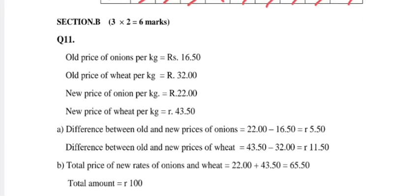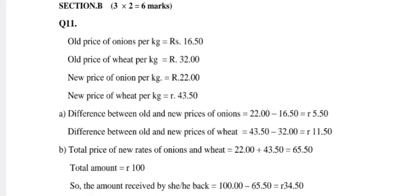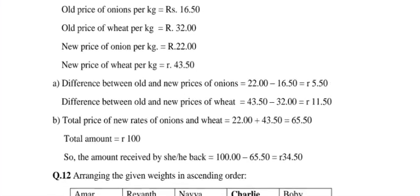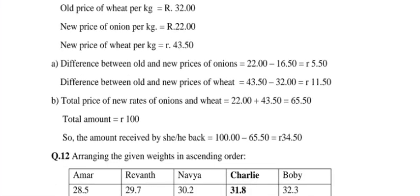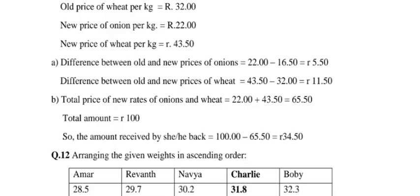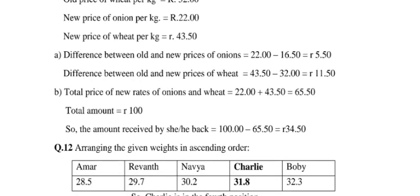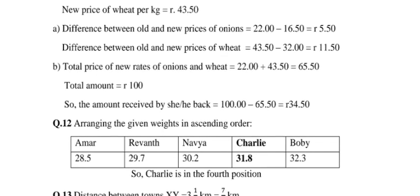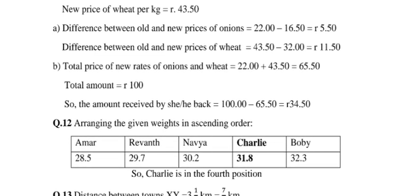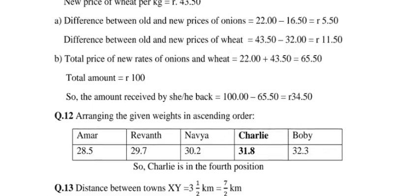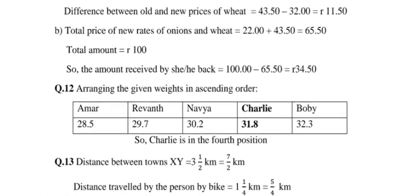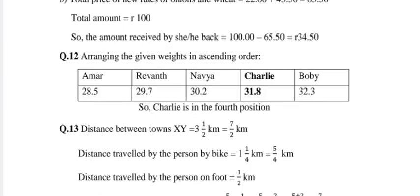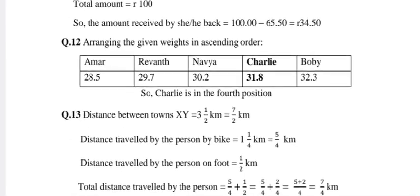Question 6 answer is B, Question 7 answer is D, Question 8 answer is B, Question 9 answer is C, Question 10 answer is B. For Section B: Old price of onions per kg ₹16.50, old price of wheat ₹32. New price of onion ₹22, new price of wheat ₹43.50. Price difference for onions: ₹5.50. Price difference for wheat: ₹11.50. Total price at new rates for onions and wheat: ₹65.50. Change from ₹100: ₹34.50.